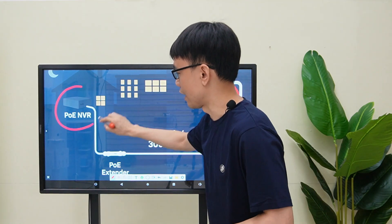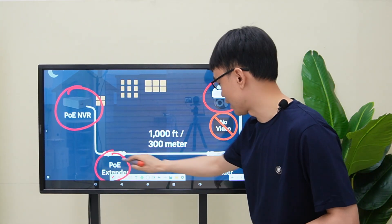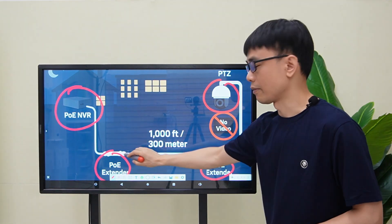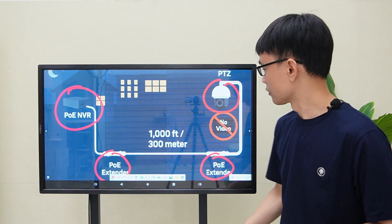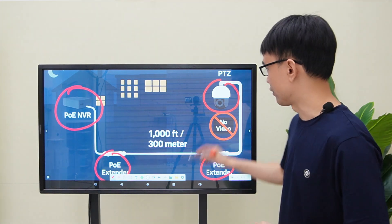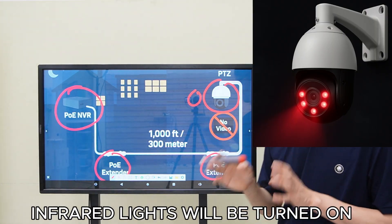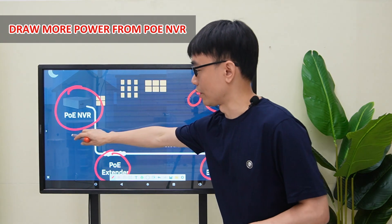And this is his setup scenario. He has the PoE NVR at his house, and he has used two PoE extenders to come up with 1,000 feet, which is 300 meters PoE long run. We suspect the power could be the issue, since this speed dome will turn on the infrared at night, and it will draw more power from this PoE NVR.